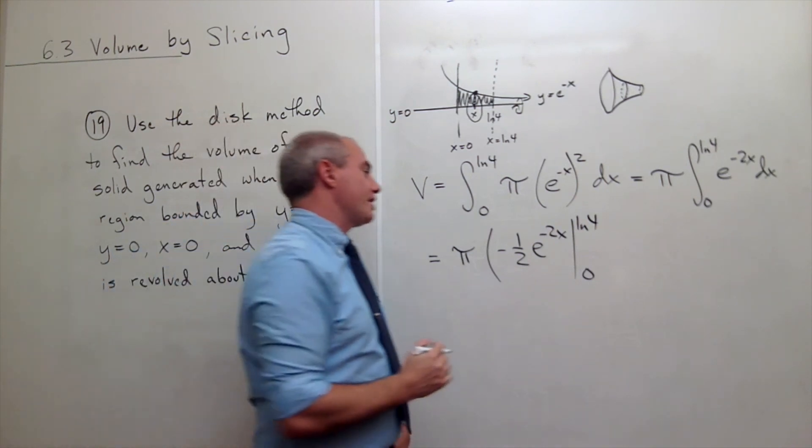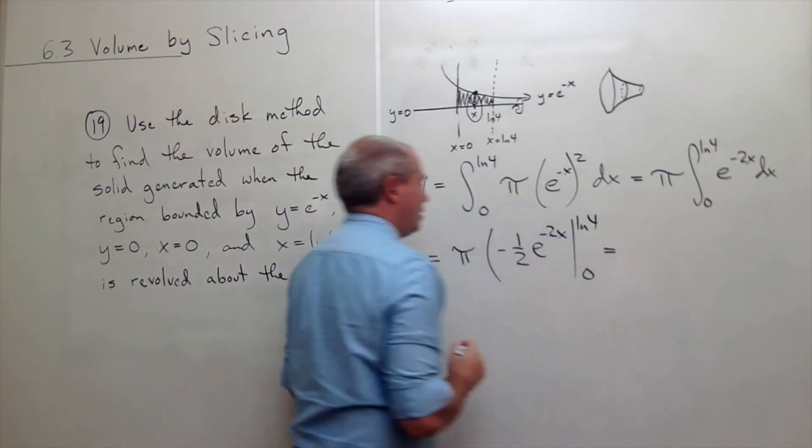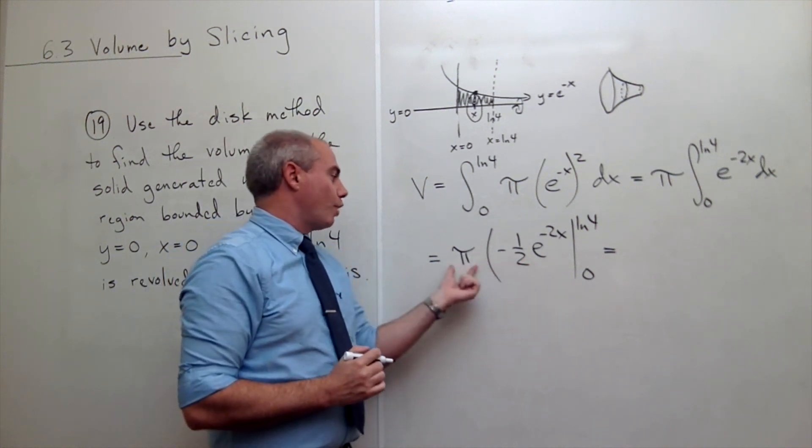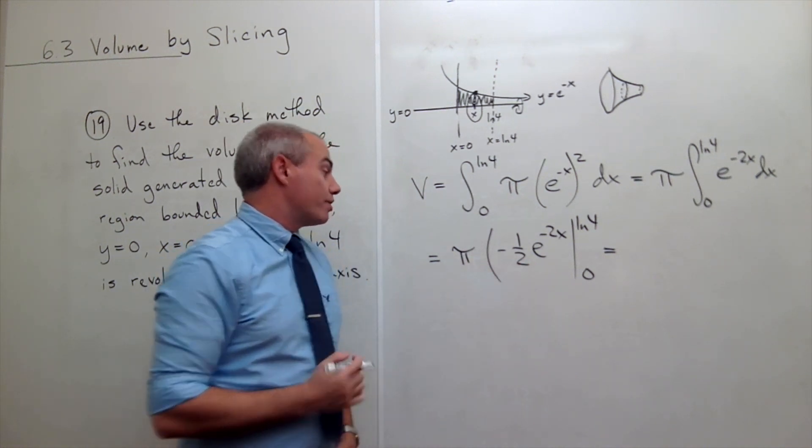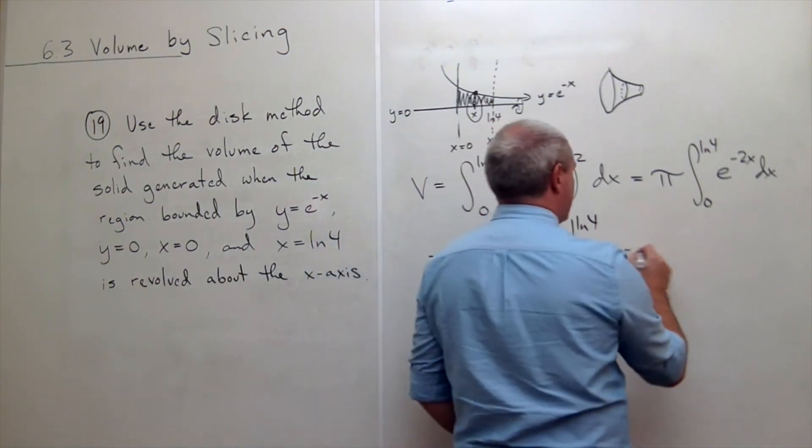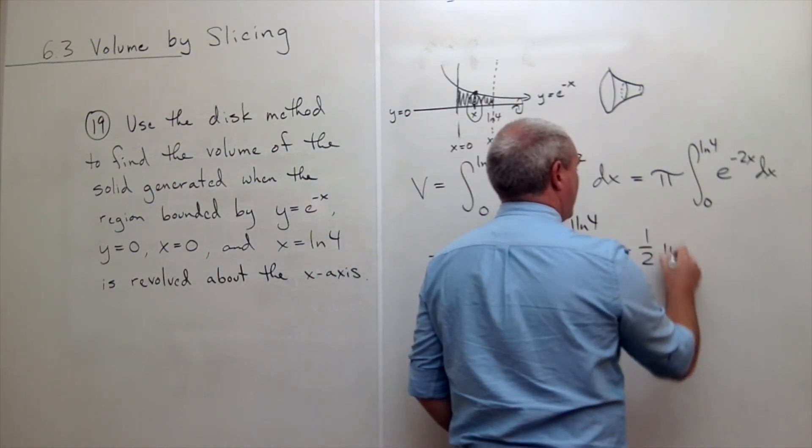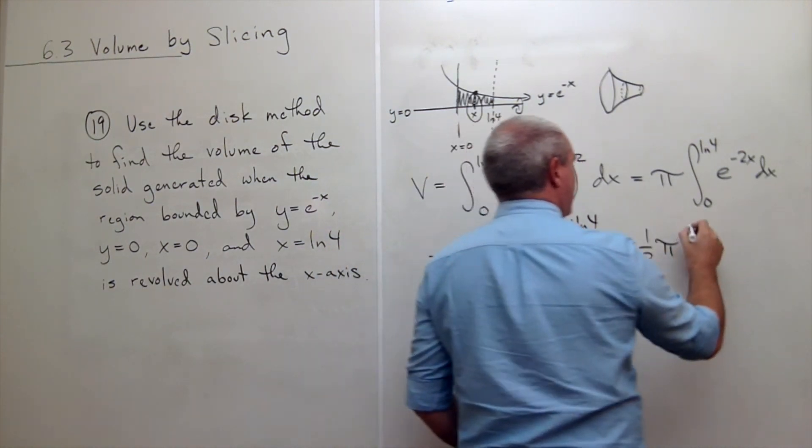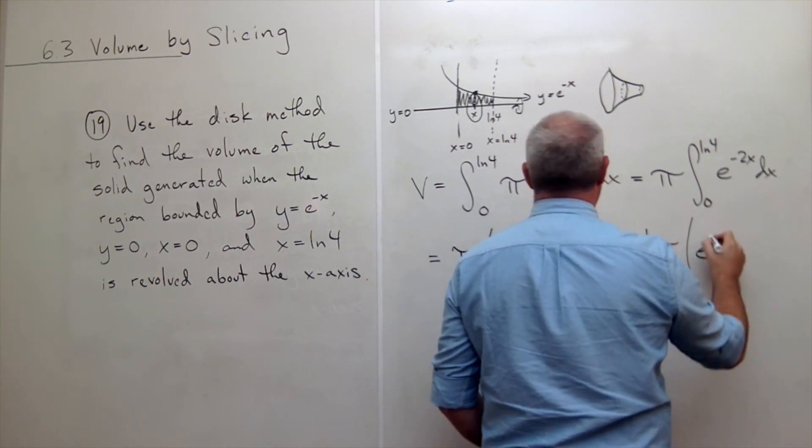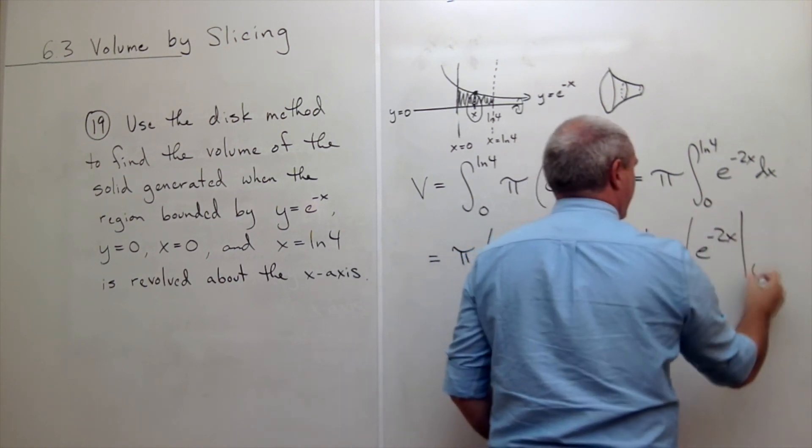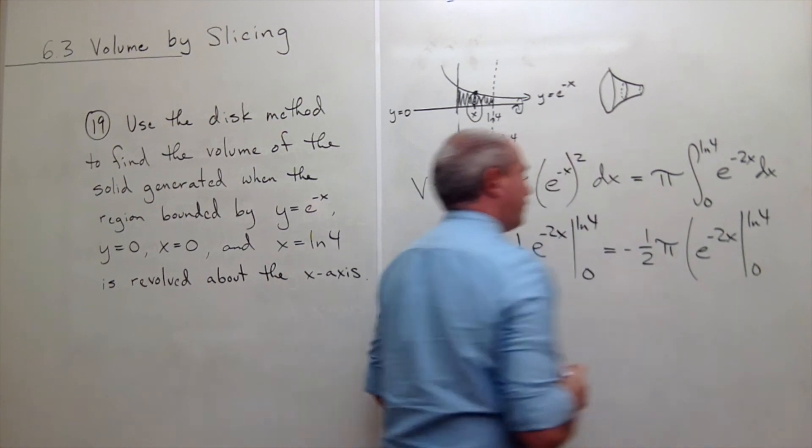We can plug things in. If I wanted to, I could pull the negative 1 half out first. Why not? Let's do it. So I got minus 1 half times pi times e to the negative 2x evaluated from 0 to ln of 4.